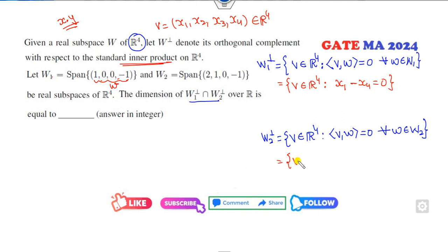Similarly, what is the collection of all those elements in R⁴? In this case, this is my W. These are the elements of W2. So that means 2x₁ + x₂ - x₄ = 0.